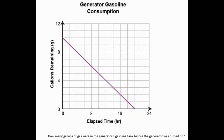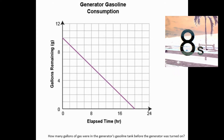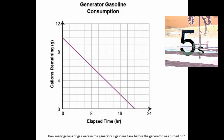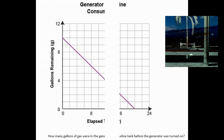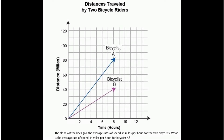This is the first one: general gasoline consumption in gallons over time in hours. The question is: how many gallons of gas were in the generator's gasoline tank before the generator was turned on? And the answer is ten.